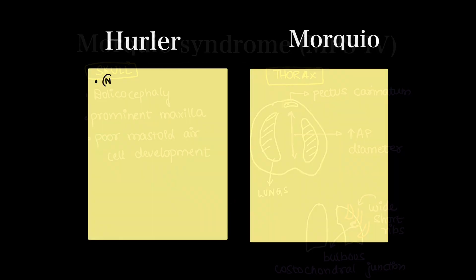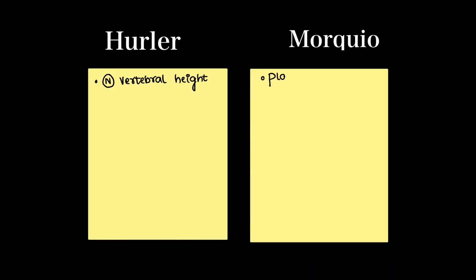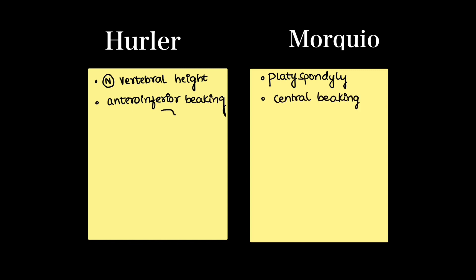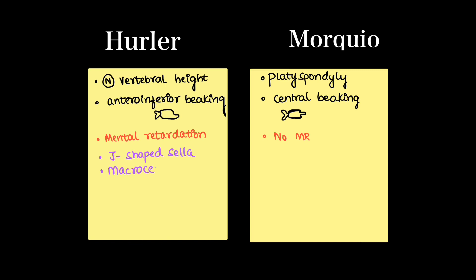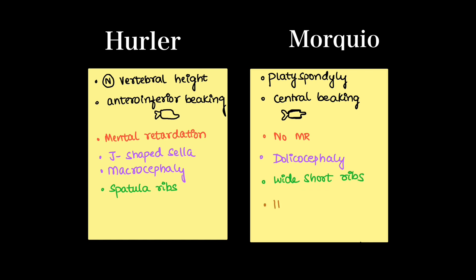Let's summarize the differences between Hurler's and Morquio. In Hurler's, we have normal vertebral height; in Morquio, we have platyspondyly. Hurler's shows antero-inferior beaking; Morquio shows central beaking. Mental retardation is common in Hurler's but absent in Morquio. J-shaped sella and macrocephaly are pathognomonic for Hurler's, while Morquio shows dolicocephaly. Hurler's has spatulated ribs; Morquio has wide and short ribs. Morquio shows hypoplastic fragmented epiphyses, which is not seen in Hurler's.